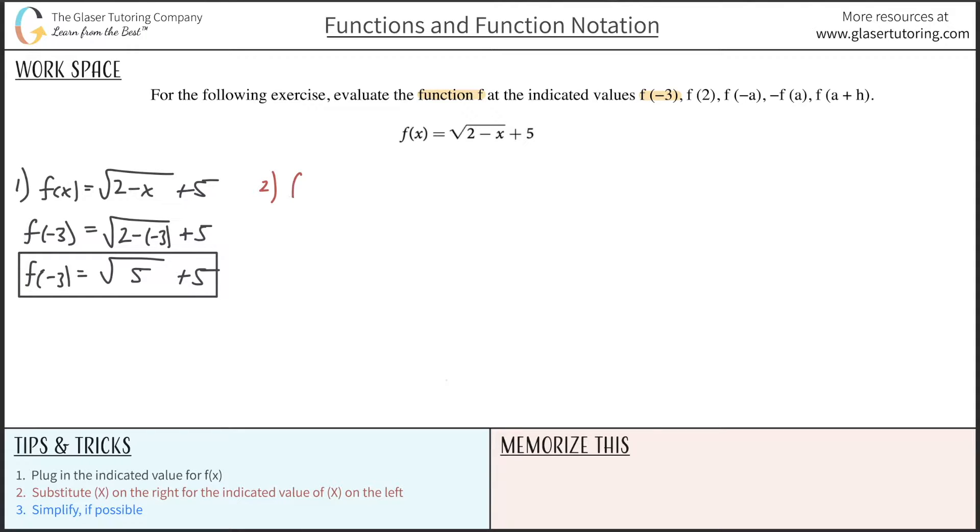Now number 2, same process. Let's rewrite the formula or the equation that they told us, radical 2 minus x, this is plus 5. So now they want us to evaluate it at f of 2. So take f of x, substitute it out for f of 2. Now everywhere on the right-hand side you see an x, plug in your 2.